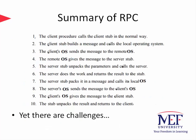Here is the summary of the example I've just provided. This summary simply orders all the detailed operations that client and server stubs, as well as the operating system, must do to make the RPC transparent and work.